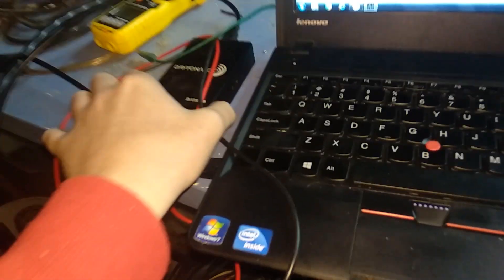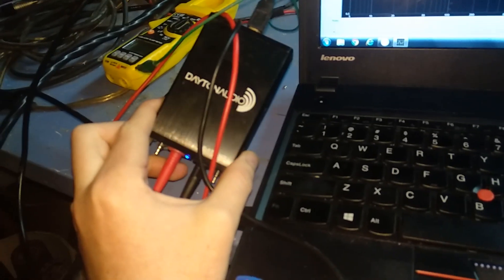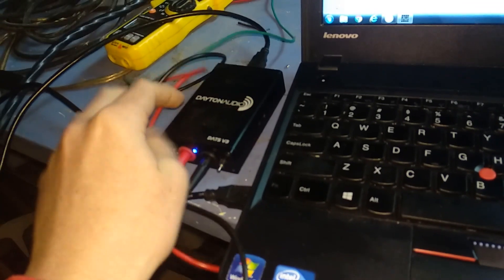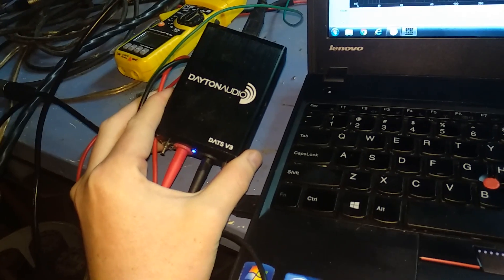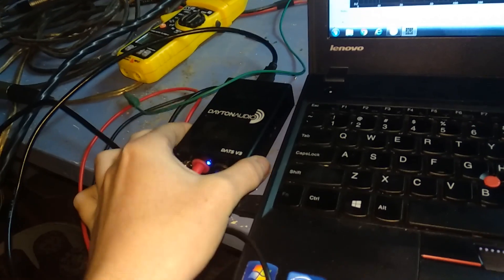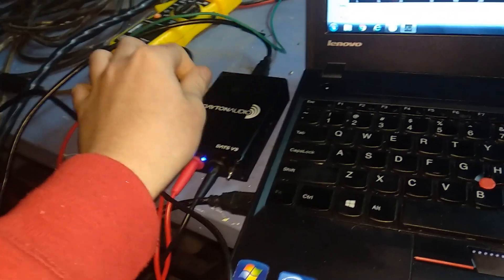Now the first one I'm going to be doing is the quickest way and it's by using this thing right here, Dayton DATS V3 speaker analyzer. This thing gets a bunch of specs for speakers using the impedance graph and it's quite a useful device.